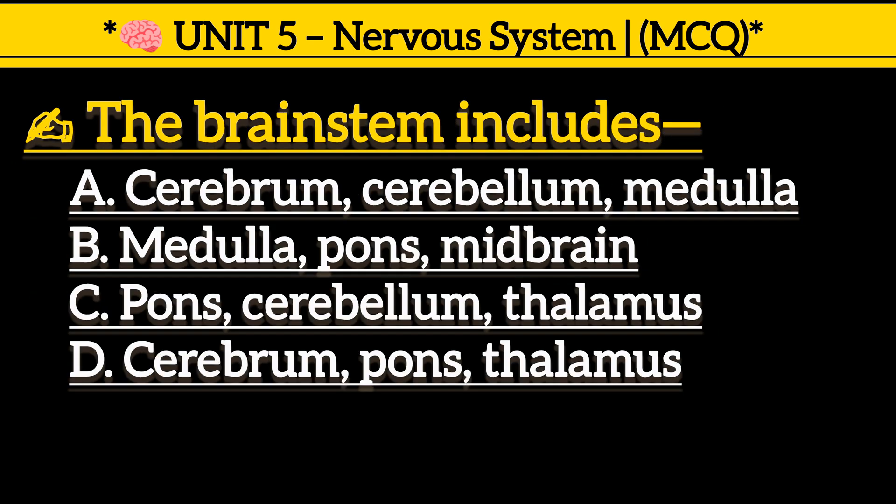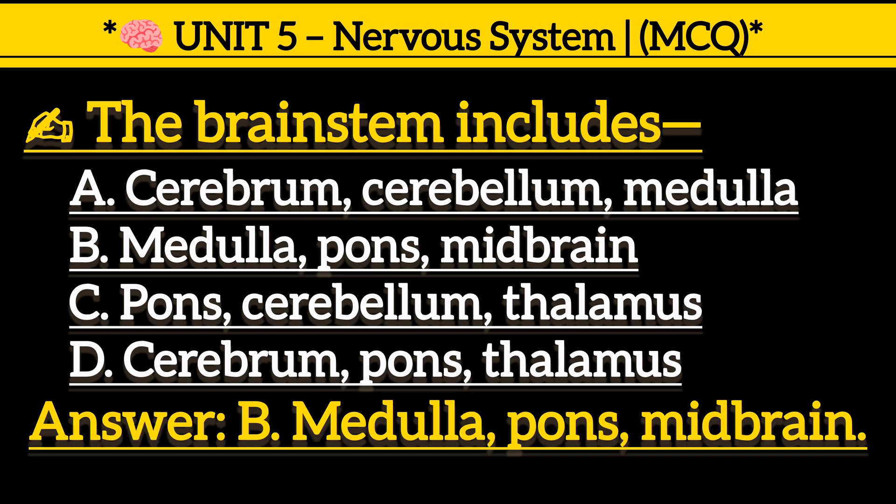The brain stem includes: Option A, cerebrum, cerebellum, medulla. Option B, medulla, pons, midbrain. Option C, pons, cerebrum, pons, thalamus. Option D, cerebrum, pons, thalamus. Correct answer is Option B, medulla, pons, midbrain.